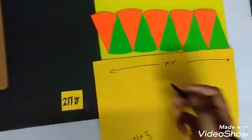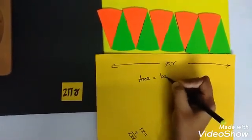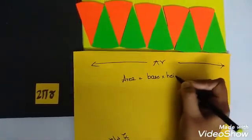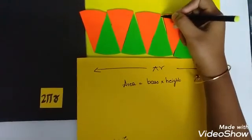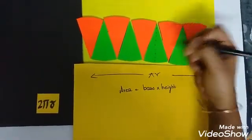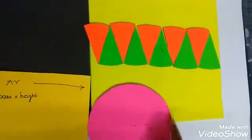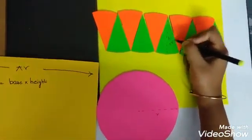Now what is the area? Area is equal to base into height, right? Now let us assume this is the height h. Now height h is nothing but the radius of the circle. So h is equal to r.